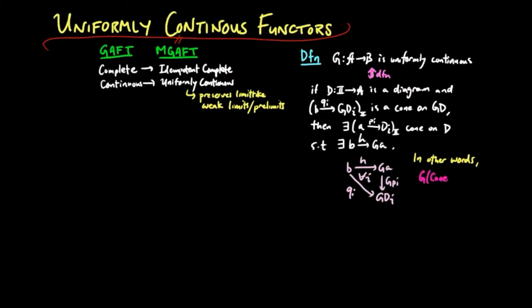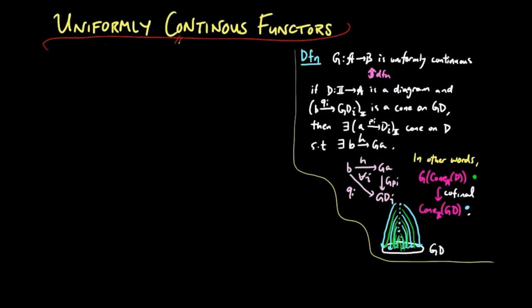In other words, G takes cones on D to a co-final collection of cones on GD in category B. If you don't know what co-final means, you can visualize it by looking at cones on GD in light blue, and if we color the collection of cones on GD coming from cones on D by the color green, then to be co-final in cones on GD just means for any light blue cone, there exists a green cone sitting inside of it.